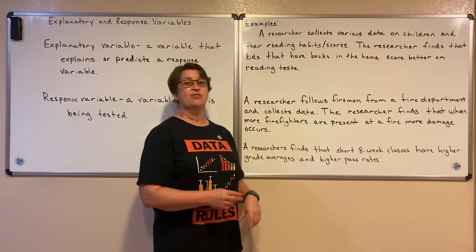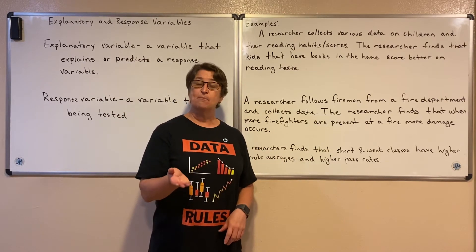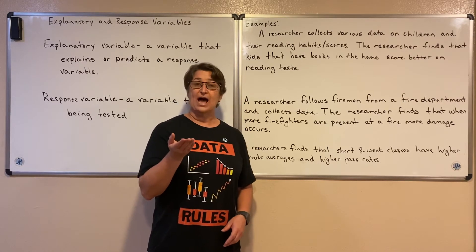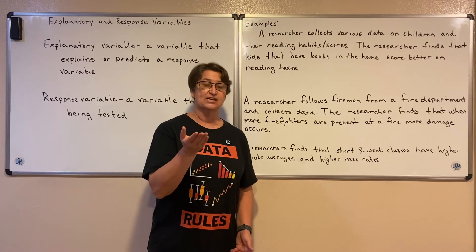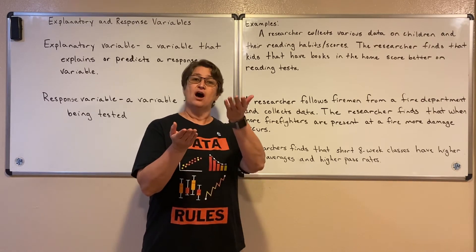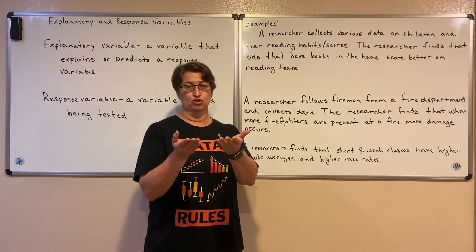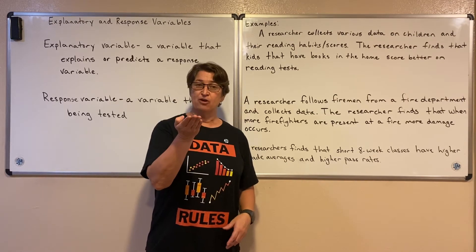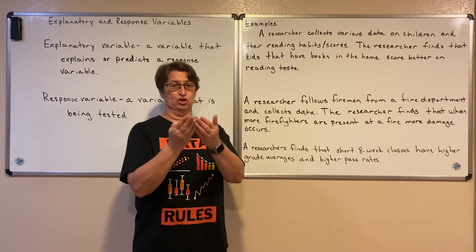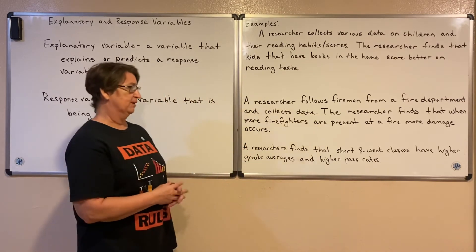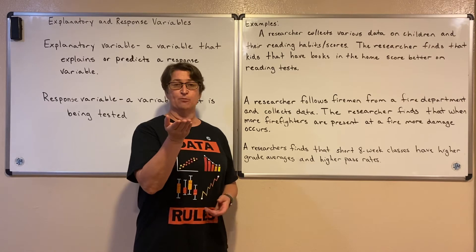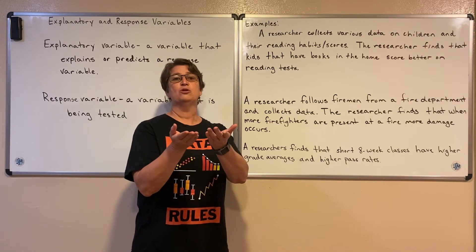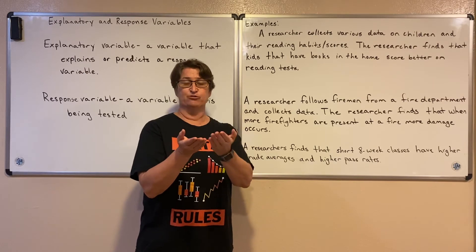So here, the researcher collects the number of firemen at a fire and realizes that that will help predict or explain the amount of damage that occurs at the fire. So the more firefighters that are there, the more damage occurs. So those two are correlated, and your explanatory is the number of firemen and the response variable is the amount of damage.